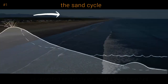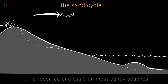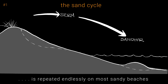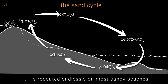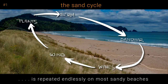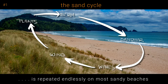This sand cycle — erosion by storm waves, deposited offshore on a sandbar, back to the beach by waves, blown up shore, and trapped and stabilized by dune plants — is repeated endlessly on most sandy beaches.